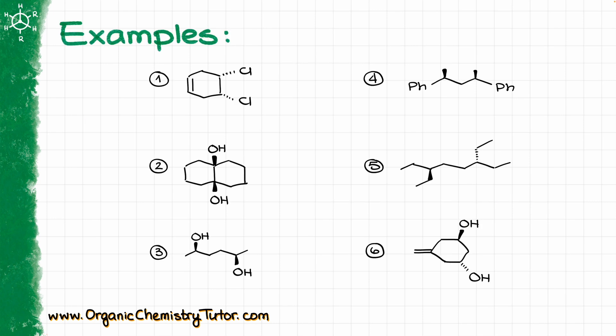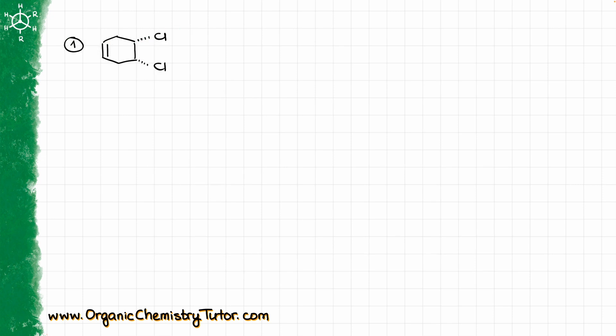Meso compound absolutely needs to have chiral atoms in it. This is a very common mistake I see a lot of students make by just blindly relying on symmetry. So be very careful and don't fall into this trap on the test. At this point you are ready to look at the examples and identify those molecules as meso or not. So I have six molecules here — let's look at them one by one, starting with molecule number one.